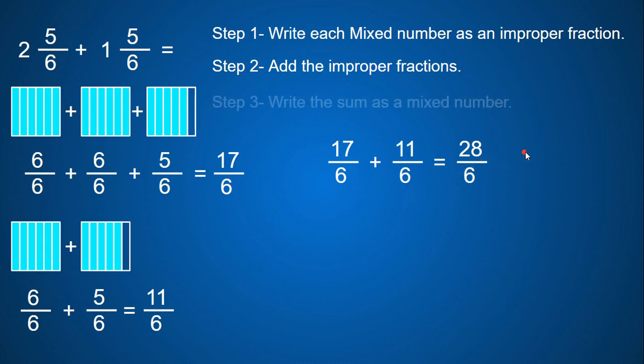And now I never want to leave my answer as an improper fraction. So I want to change that improper fraction into a mixed number. So how many wholes do I have here in my twenty-eight sixths and how many left over? So twenty-eight divided by six.